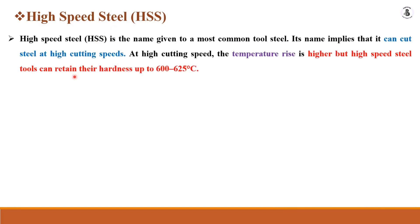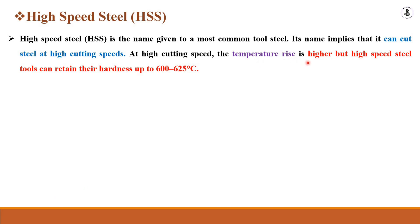Next is high speed steel, or HSS — the most common tool steel material with wide applications for cutting hard materials. This material has the ability to cut steel at high cutting speeds, which increases the temperature at the tip of the tool and near the chip area. High speed steel can retain its hardness up to 600 to 625 degrees centigrade, so it has good hot hardness.